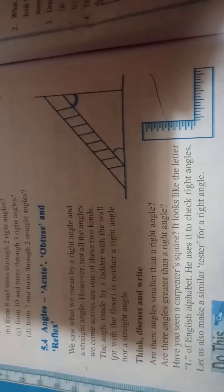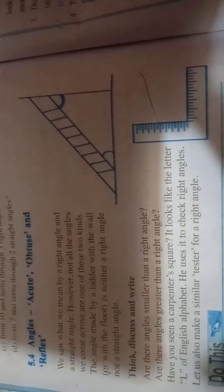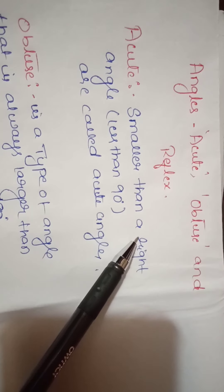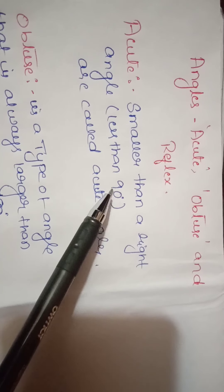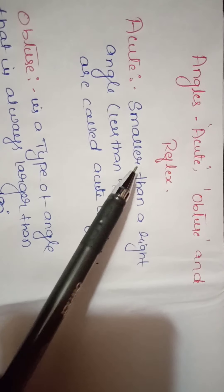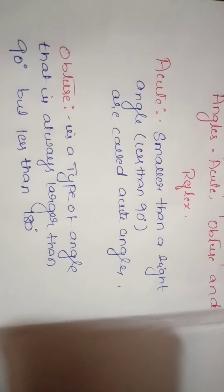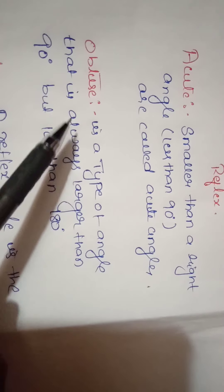Hello students. Chapter 5: Understanding Elementary Shapes. Topic 5.4: Acute, Obtuse, and Reflex Angles. An acute angle is smaller than a right angle — it is less than 90 degrees. It is a small angle, less than 90 degrees.